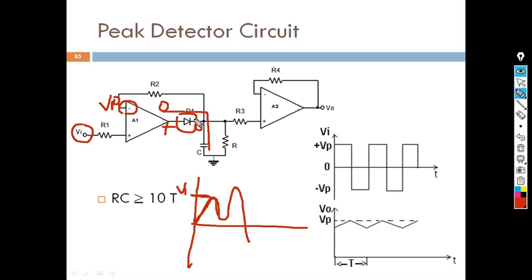Zero output from the operational amplifier will reverse bias the diode, and the capacitor will start to discharge through the resistor. However, we have designed the resistor value so that the capacitor discharges slowly — it will almost remain the same. Once again, when the input becomes greater than V1, the output of the comparator becomes high, forward biasing the diode, and the capacitor recharges until it catches the new peak.